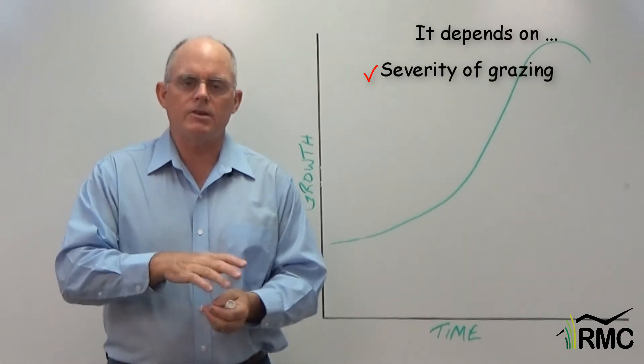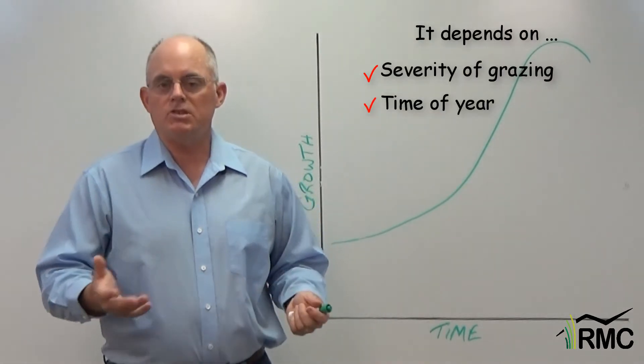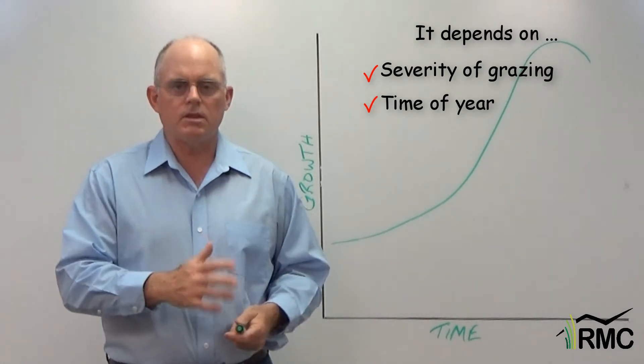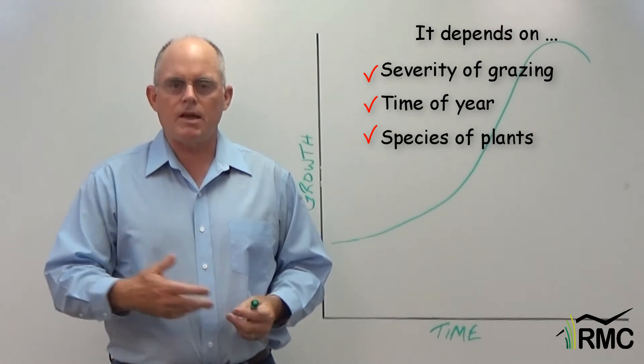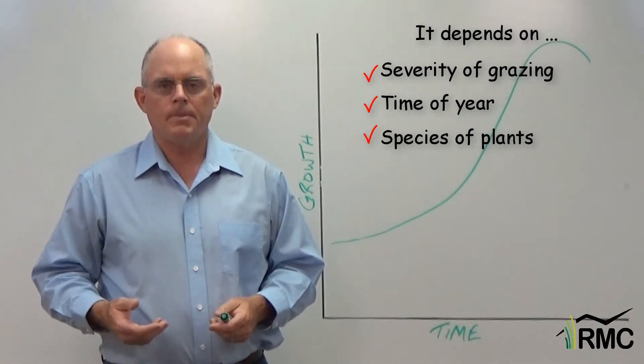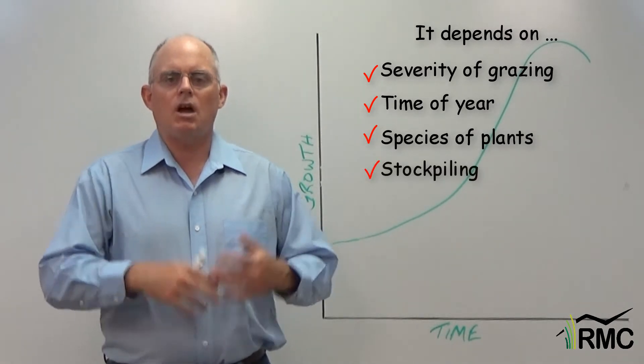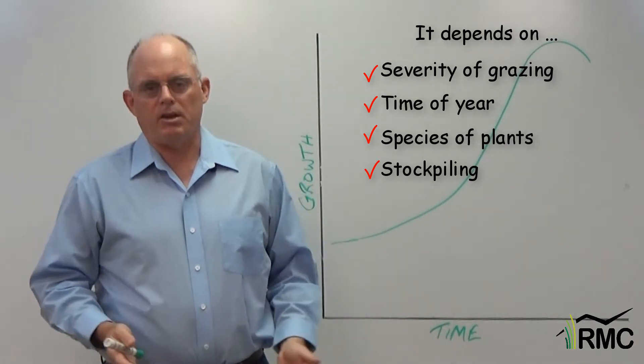It depends on how severely we graze our pastures. It depends on the season. Things grow more rapidly in the spring than they do in late summer. It depends on the type of plants that we have. Warm season grasses or cool season grasses. It depends on whether you want to stockpile grass for the winter and other management objectives.